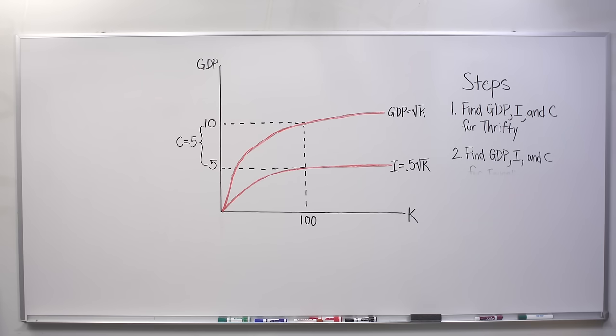Now onto step 2, which is to do the exact same thing for Inventive. Its production function is GDP equals 2 times the square root of K. And given that it has the same initial capital stock as Thrifty, 100, its GDP this year is square root of 100 times 2, or 20.